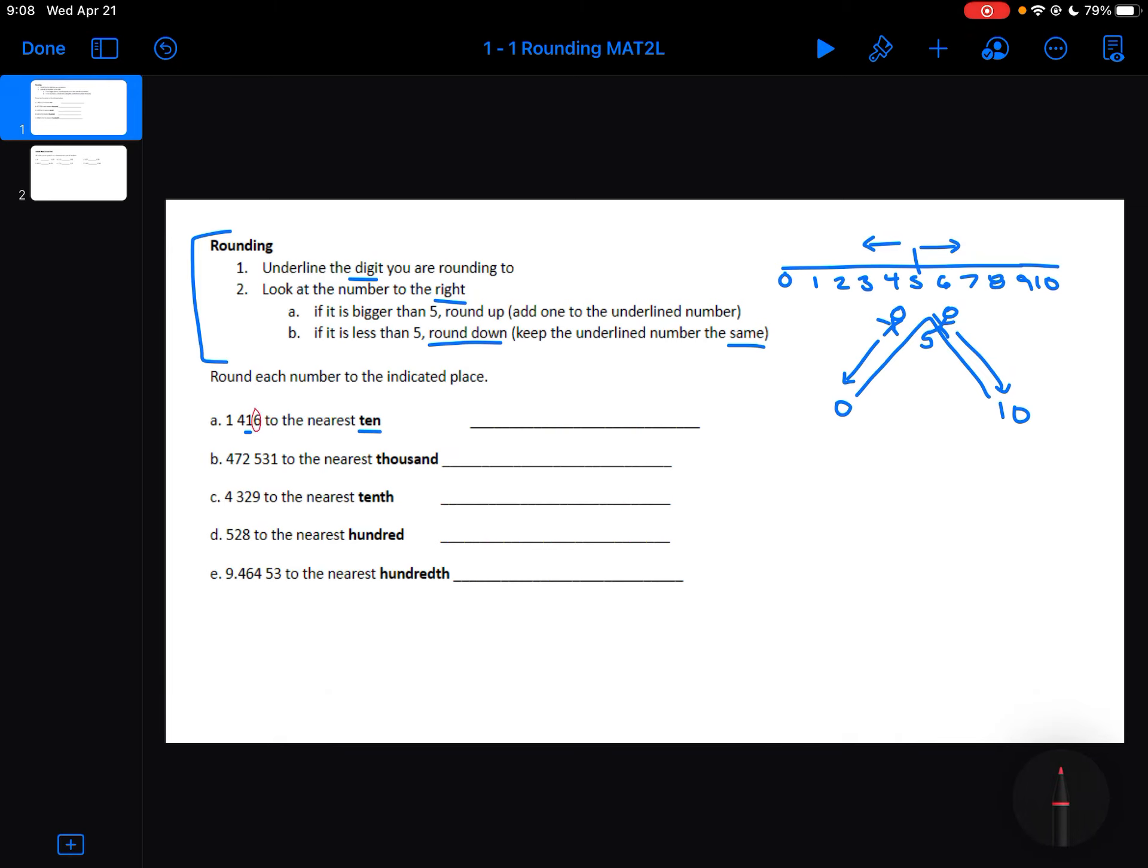So that means that 1,416, my numbers in front stay the same. The 1 is going to round up to a 2, and then the numbers after the one I rounded stay as a 0.